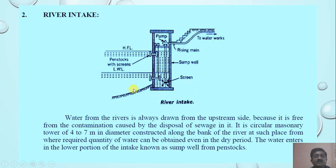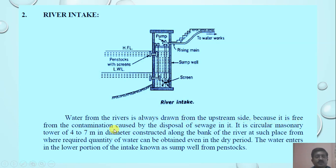The second type is the river intake. You can see the bank of the river, the high flood level, and the low water level. Penstocks are provided with screens. Pumps are provided here, and this is the rising main which takes the water to the water treatment plant. A screen is provided to prevent entry of debris and suspended particles. This is called the sump well. The water from rivers is always drawn from the upstream side because it is free from contamination caused by disposal of sewage. It is a circular masonry tower of 4 to 7 meters in diameter, constructed along the bank of the river at a place from where the required quantity of water can be obtained even in the dry period. Water enters the lower portion of the intake, known as the sump well, from penstocks.